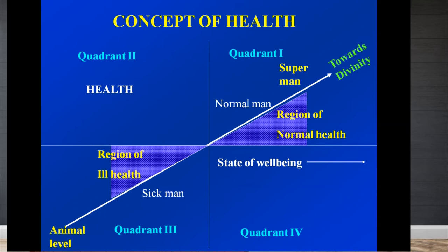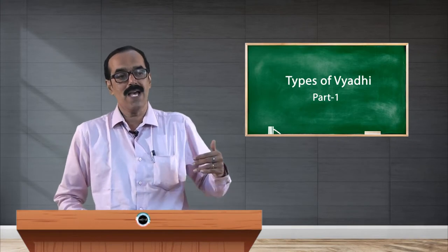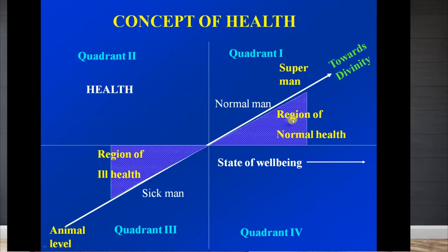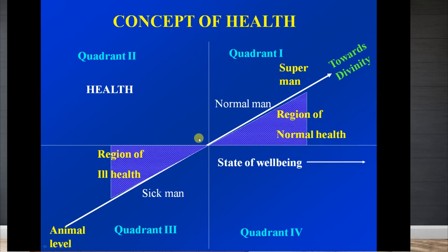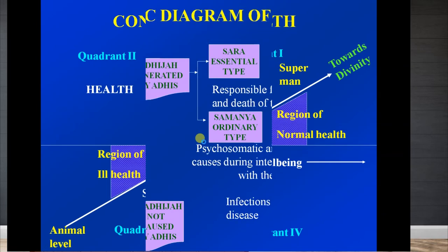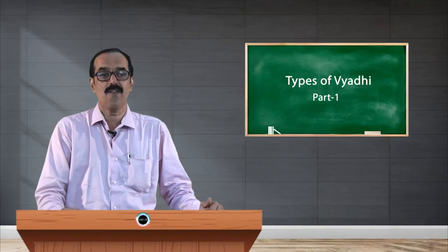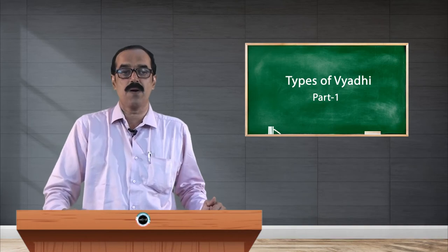As you can see in this first quadrant, it represents the region of normal health. However, due to wrong lifestyle and wrong ways of living, we slip into the third quadrant — the region of ill health, and further to the animal level. Yoga's role is to bring you to the fourth state of well-being and balance, and further up to the first quadrant — the superhuman, divine human being level.